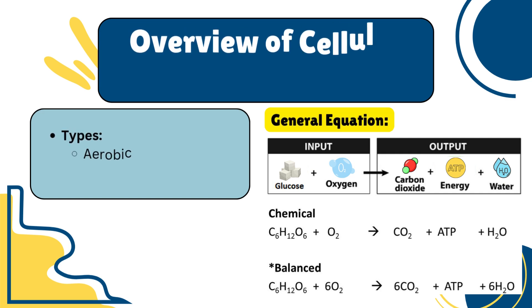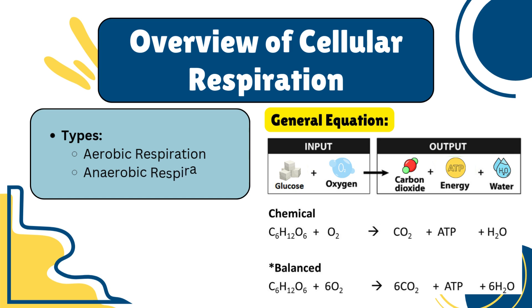Cellular respiration can be categorized into two main types: aerobic and anaerobic respiration. Aerobic respiration requires oxygen and produces a greater amount of ATP, while anaerobic respiration occurs without oxygen and yields less energy. The overall equation for cellular respiration summarizes the process: glucose and oxygen are transformed into carbon dioxide, water, and ATP.